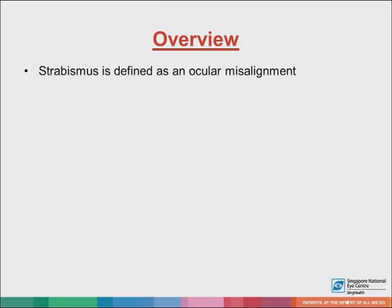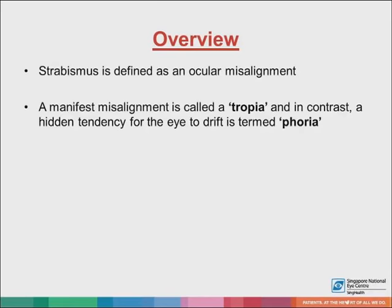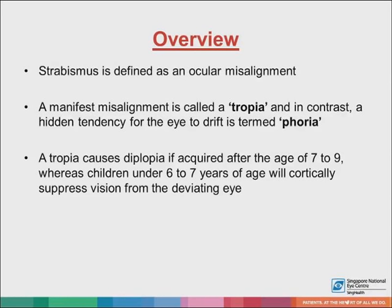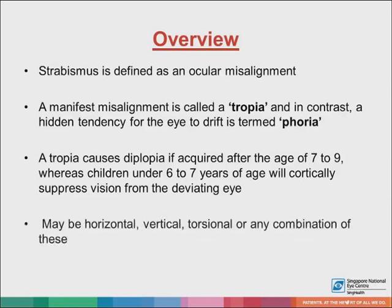So what is strabismus? Strabismus is defined as an ocular misalignment. It's termed a tropia when this misalignment is manifest, and a phoria when it's latent or hidden. In general, a tropia causes diplopia if acquired after the age of 7 to 9, whereas younger children under the age of 6 to 7 tend to cortically suppress vision from the deviating eye. Hence, the symptom of diplopia can give us a clue to the age of onset. Strabismus can be horizontal, vertical, torsional, or any combination of these.